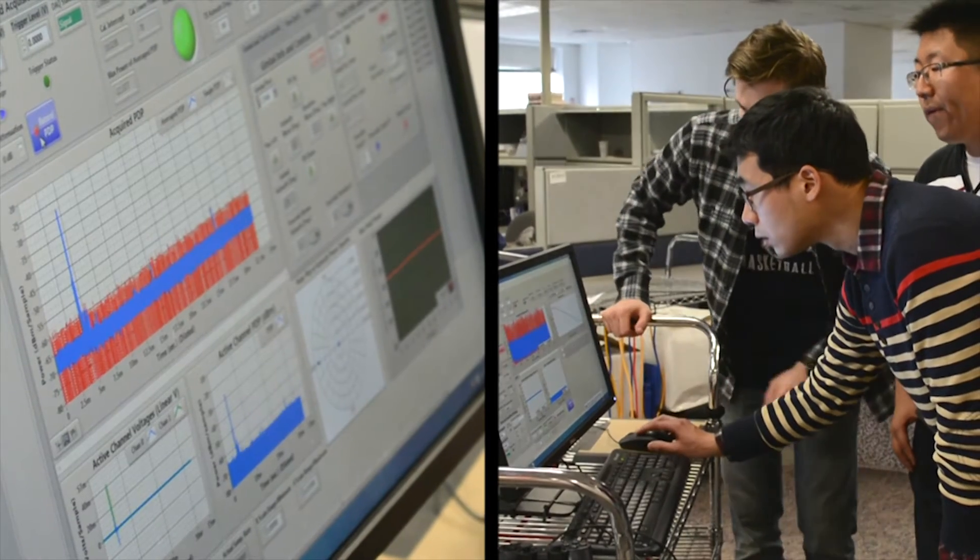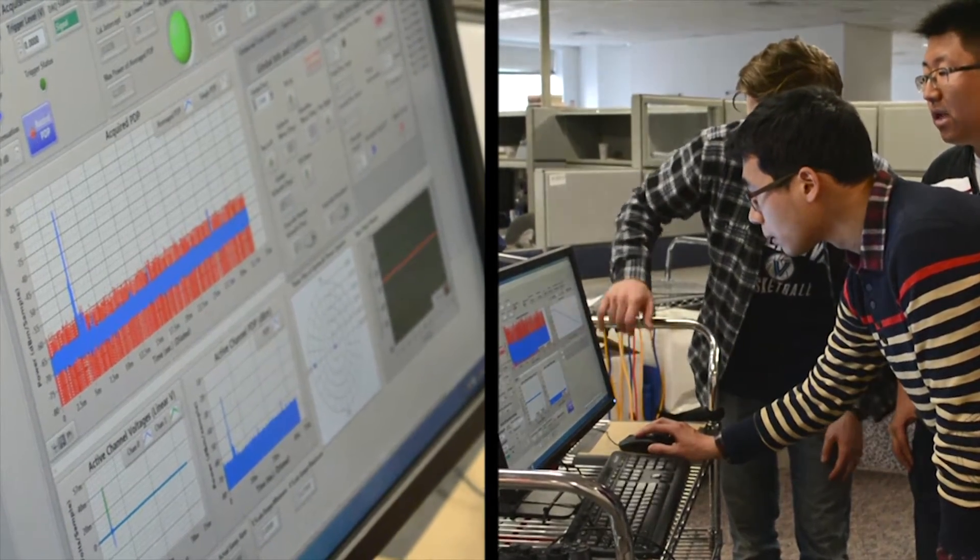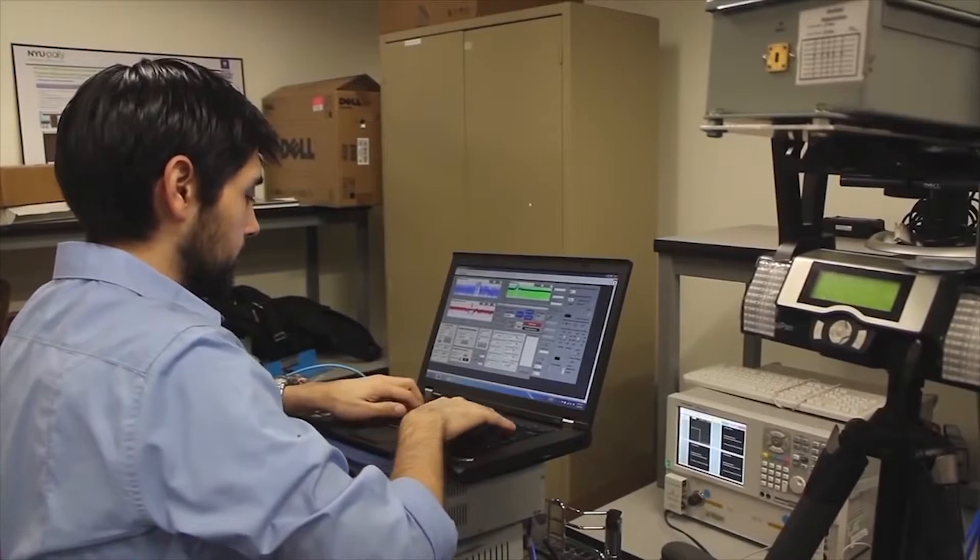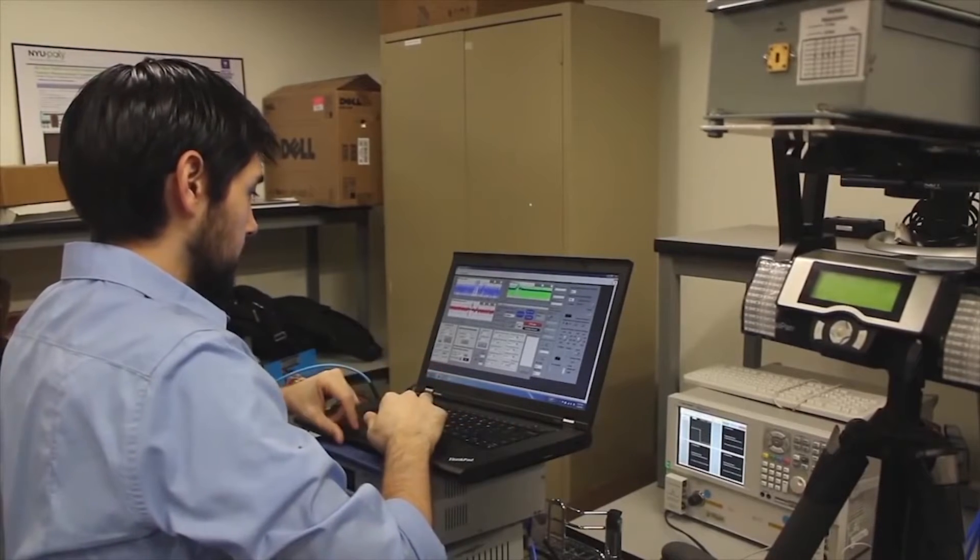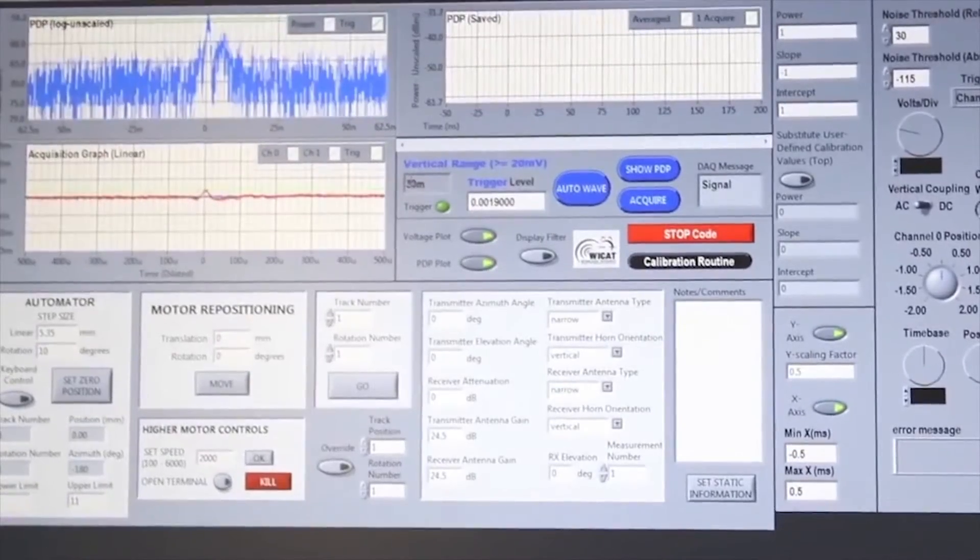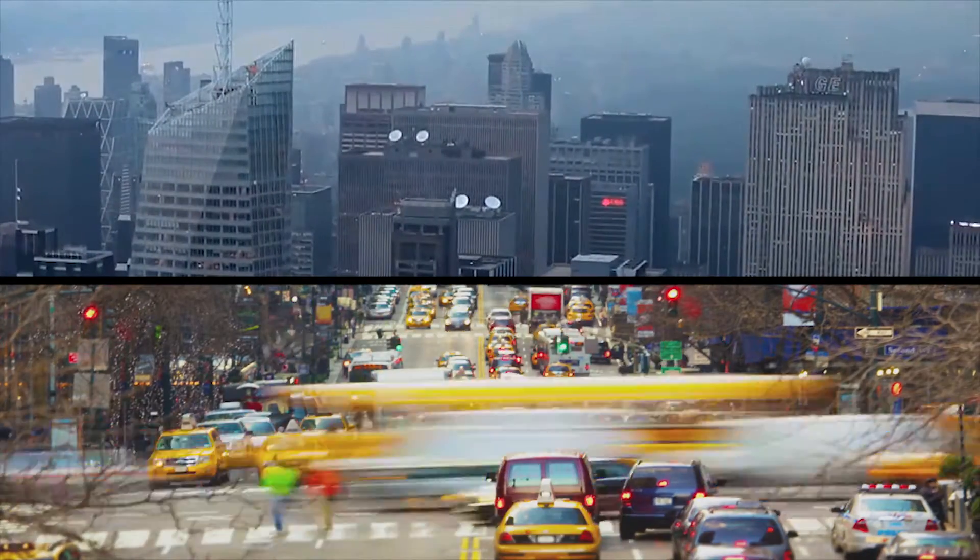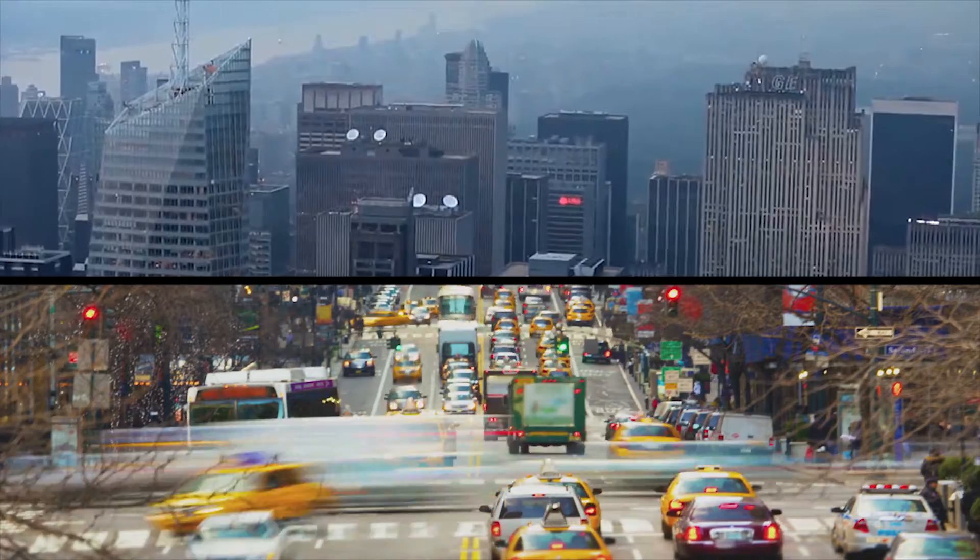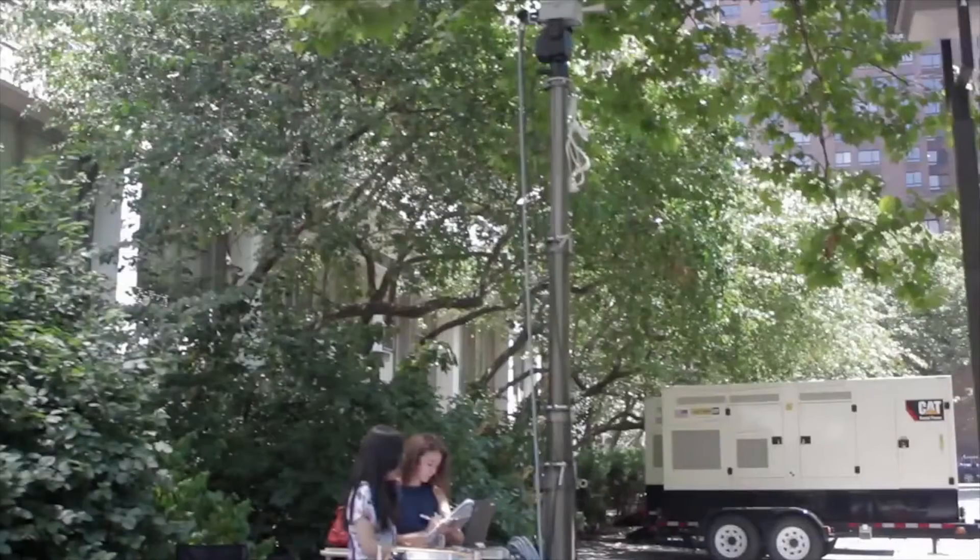NYU Wireless is the world's first academic research center to categorize the millimeter-wave frequency for 5G cellular. We've performed these measurements in one of the toughest, most densely populated areas of the world, New York City, providing much-needed data to the wireless community.